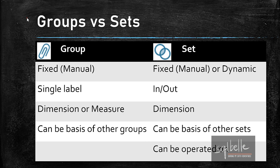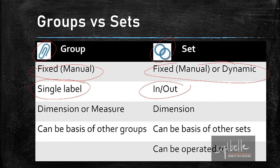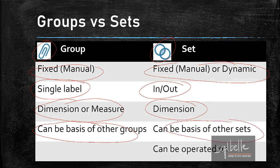Let's recap what we've talked about. In terms of visual cues, groups have a paperclip icon and sets have a Venn diagram. Groups are fixed and static — if you need to add or remove values, you have to manually adjust them. Sets can be either fixed or dynamic, with conditions allowing automatic membership assignments. By default, groups create a single label for all members; sets by default give you 'In' and 'Out' values, with an option to show members. Groups can be created from dimensions or measures; sets only from dimensions. Both can be the foundation of additional groups and sets. A big difference: we can operate on sets — creating a union, intersect, or difference between two sets.